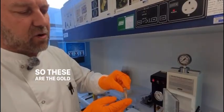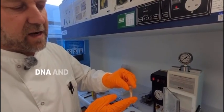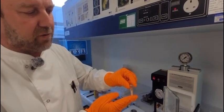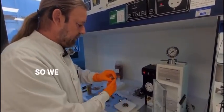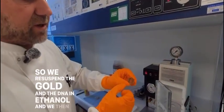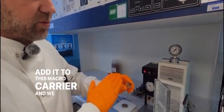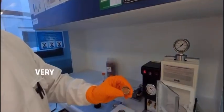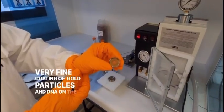So these are the gold particles and we will coat those with DNA and then shoot them into the plant material. We resuspend the gold and the DNA in ethanol and we then add it to this macro carrier and we have a very thin and very fine coating of gold particles and DNA on the macro carrier.